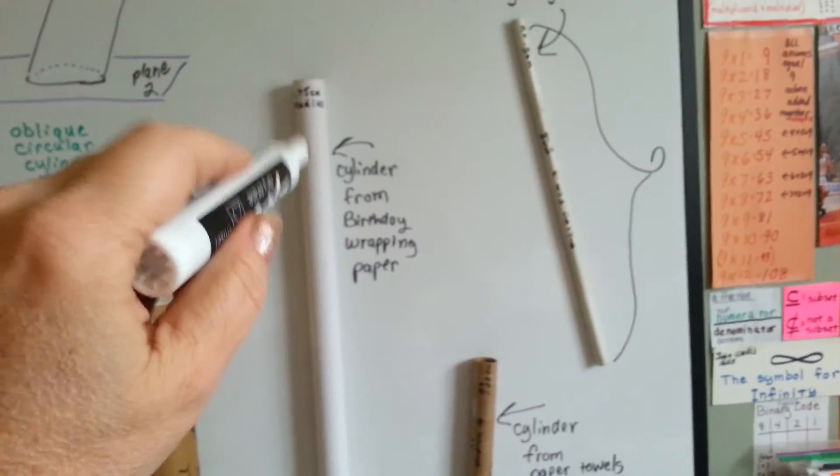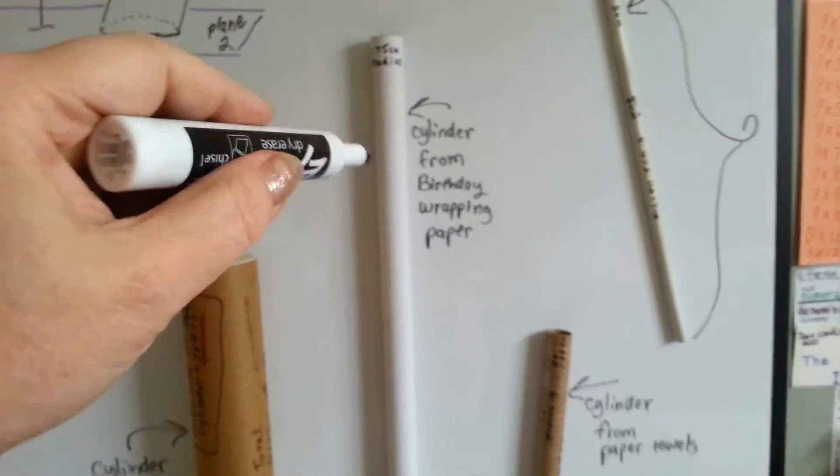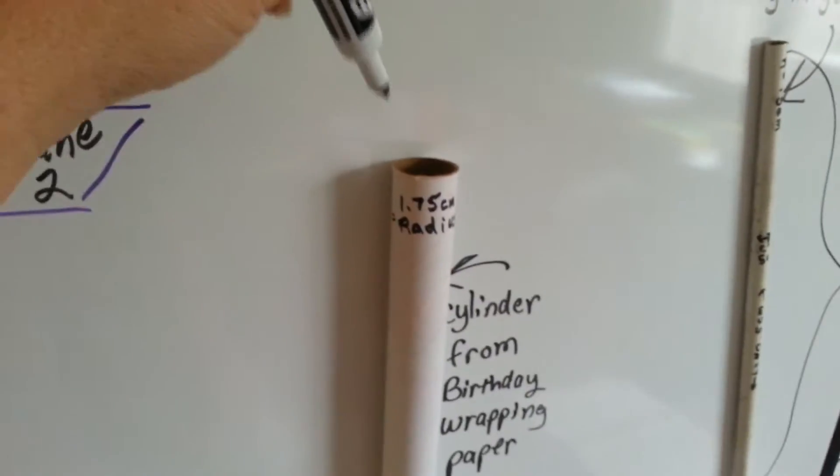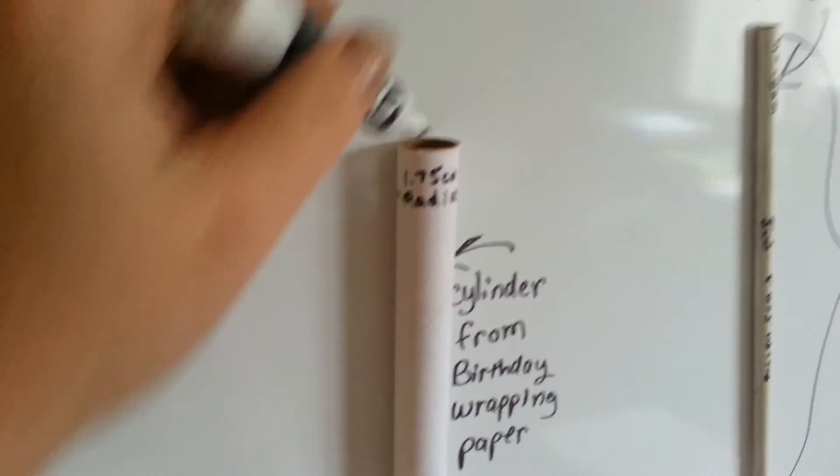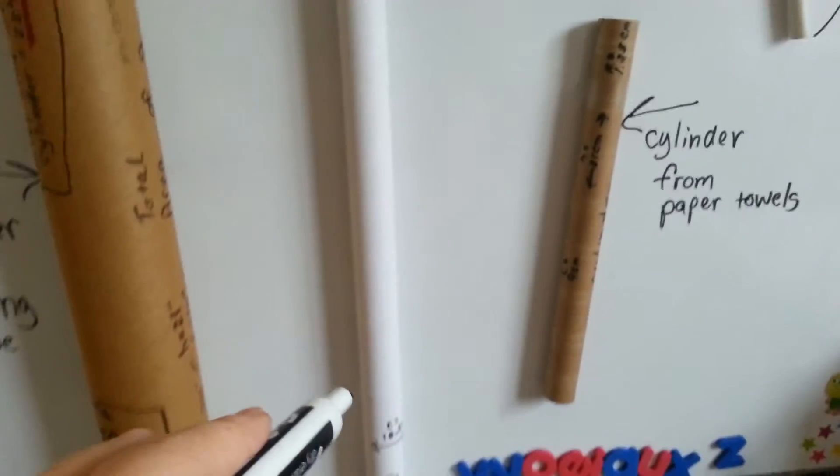It's a coat hanger. Here's a cylinder from a birthday wrapping paper. You can see the opening there for the base. It's pretty long.